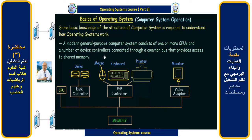There are a number of device controllers connected through a common bus that provides access to shared memory. Looking at this diagram, we have hardware like your disk, mouse, keyboards, printers, and monitors. Each of these devices is connected to a controller responsible for how the device works — for example, the disk is connected via the disk controller, USB devices via the USB controller, and the monitor via a video adapter.